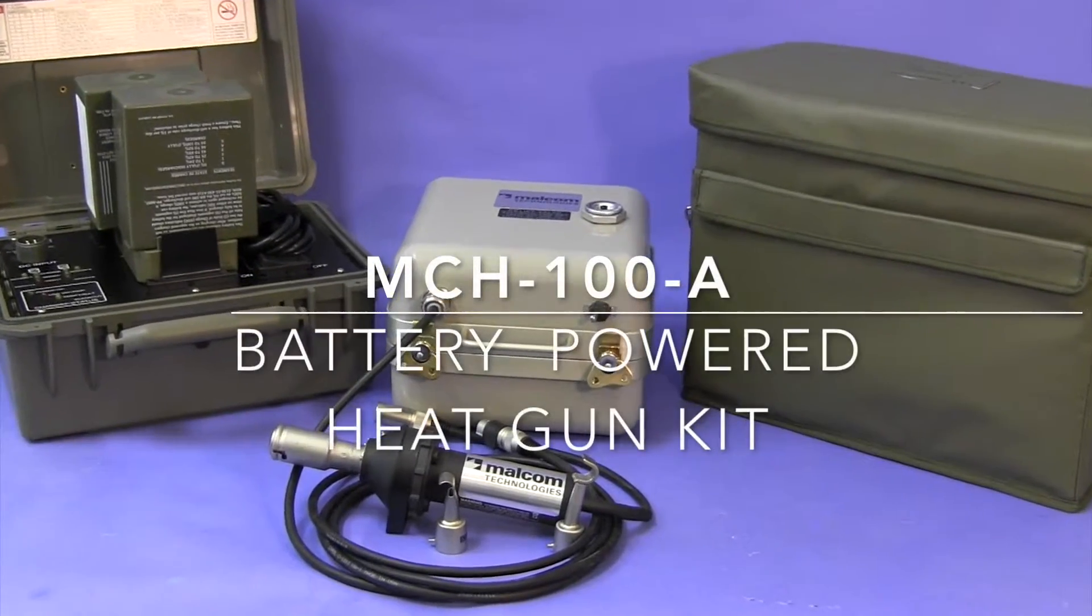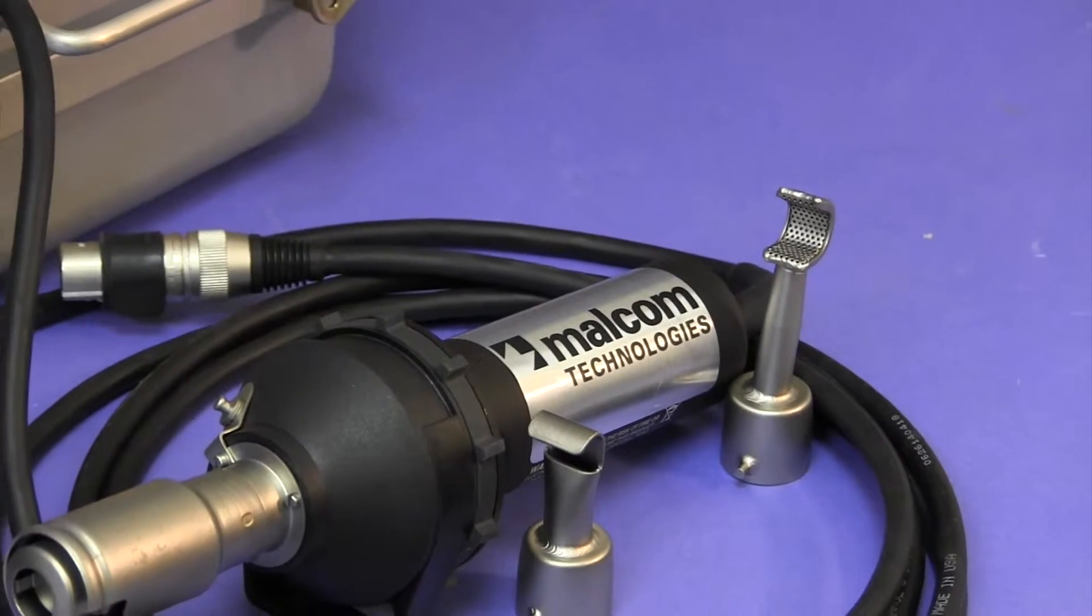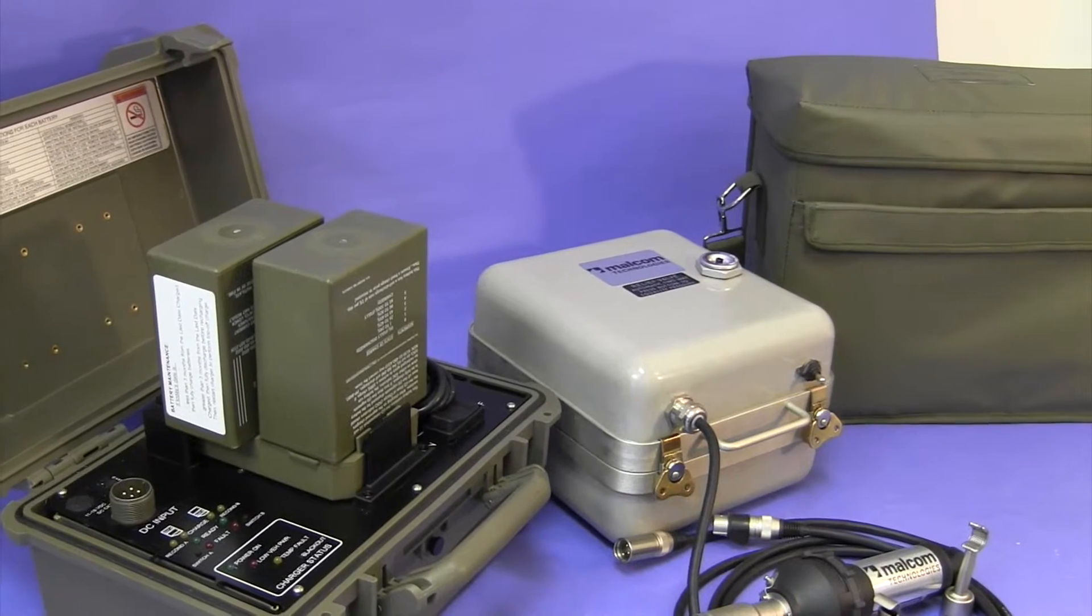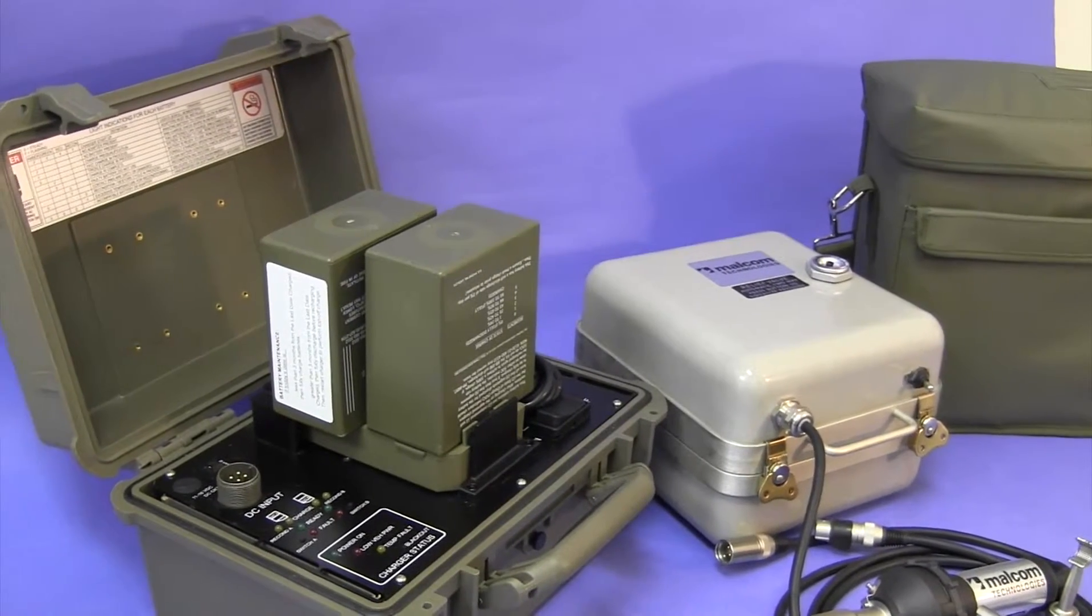The MCH-100A battery-powered heat gun kit is a powerful hot air hand tool capable of producing air temperatures greater than 1,000 degrees Fahrenheit for more than 30 minutes of continuous use on a single two-hour charge.